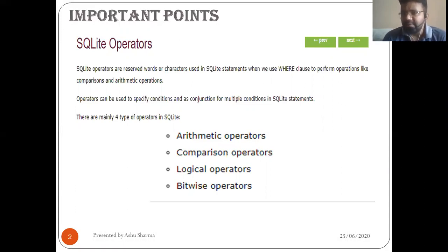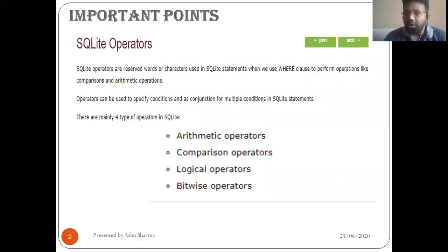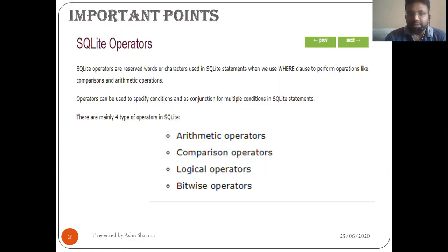There are mainly four types of operators in SQLite: arithmetic operators, comparison operators, logical operators, and bitwise operators. We already have experience with unary operators, binary operators, and some other operators like delimiters. It depends on the precedence and associativity rules for how to operate with these. Let's move to the next slide.